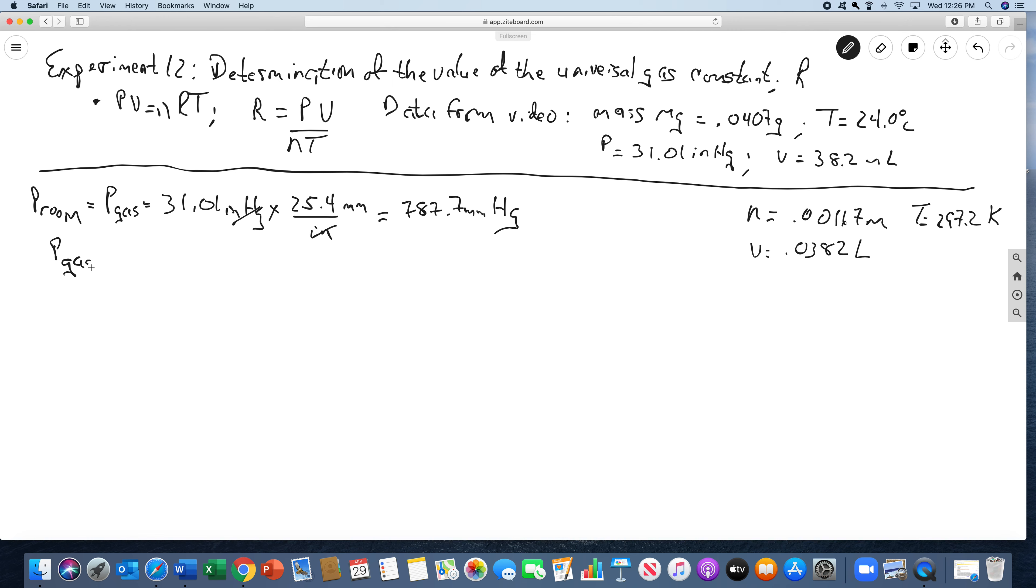Now, the problem is that the pressure of the gas, because this is collected over water, is the pressure of the hydrogen plus the pressure of the water. This is what's actually called Dalton's law of partial pressures. All it says is that all of the gases in the container exert pressure. The pressure that you measure is the sum of the pressures. Since there's water, there's always some in the gas phase. So the pressure of hydrogen is the pressure of the gas minus the pressure of the water. To get the pressure of the water, there's a table in your lab manual on page 172. The pressure of the water at 24 degrees is 22.4. We just looked that up in a table.